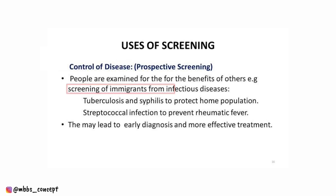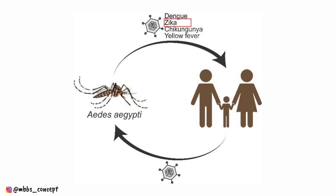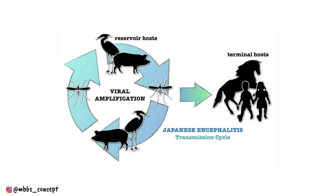In another question they were asking about prospective screening — it is the screening of immigrants. One question asked about the strain of influenza that caused the pandemic recently — it was swine flu, that is H1N1.